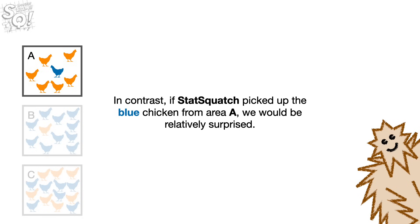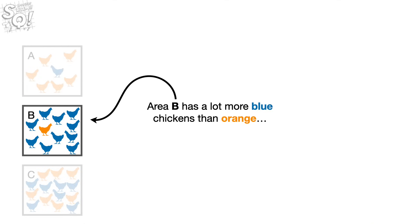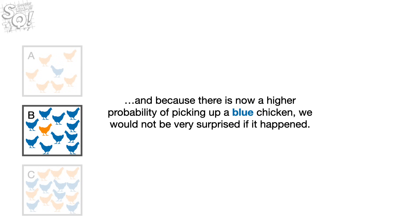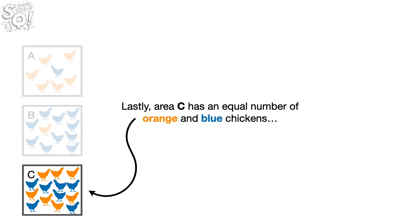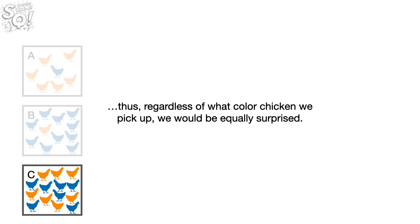In contrast, if StatSquatch picked up the blue chicken from area A, we would be relatively surprised. Area B has a lot more blue chickens than orange. And because there is now a higher probability of picking up a blue chicken, we would not be very surprised if it happened. And because there is a relatively low probability of picking the orange chicken, that would be relatively surprising. Lastly, area C has an equal number of orange and blue chickens. Thus, regardless of what color chicken we pick up, we would be equally surprised.